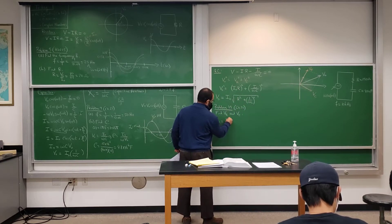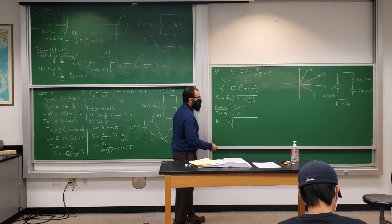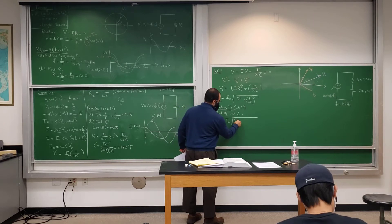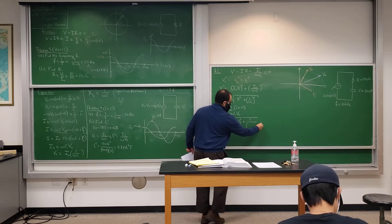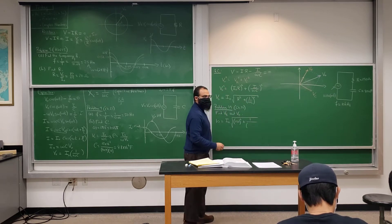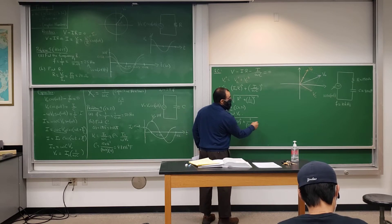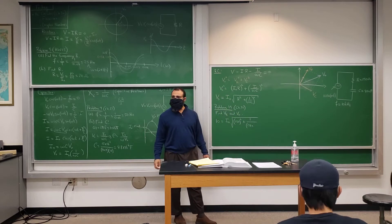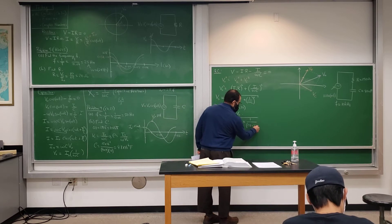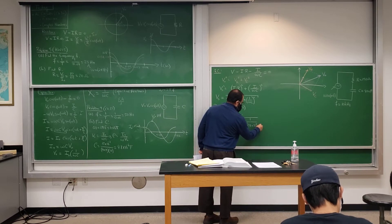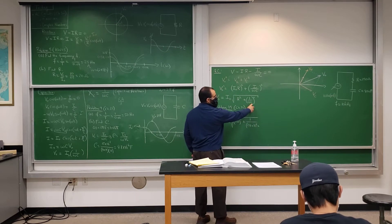V0 equals I0 times the square root of R squared plus (1 over omega C) squared. Omega is 2 pi times the frequency, which is 10 kilohertz — that's 10 times 10 to the 3, which is 10 to the 4th. Then times the capacitance, omega times C. Capacitance is 80 times 10 to the minus 9.